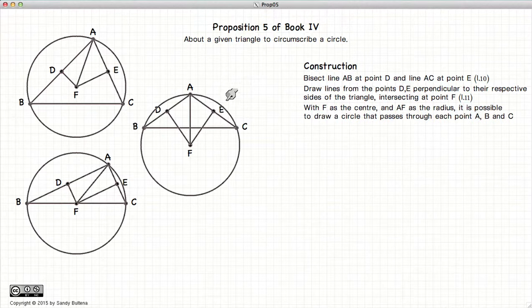Now with F as the center and AF as the radius, we draw a circle. And this circle will pass through the points A, B, and C in all three of these cases.